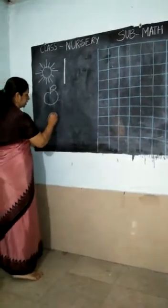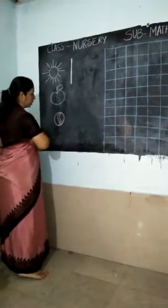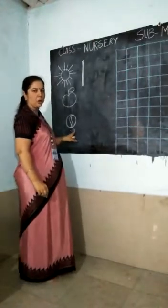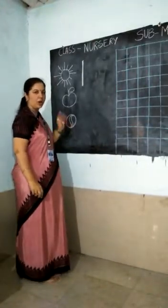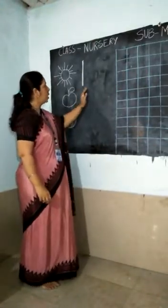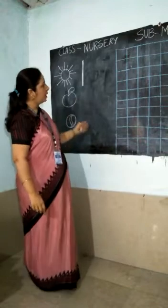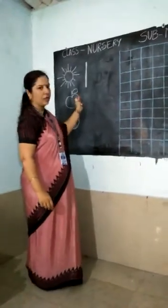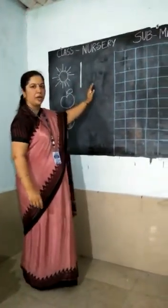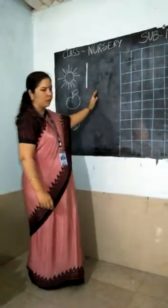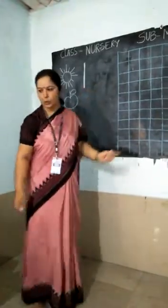What is this? Ball. How many balls? One ball. Today we have to start the number after number one. One after number — two. One after number — two.